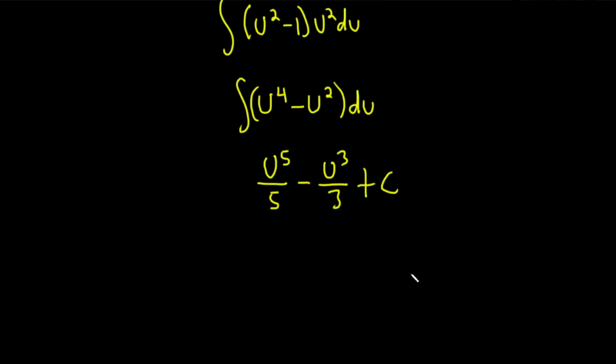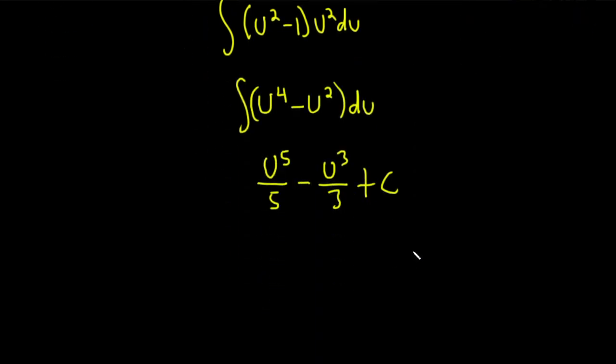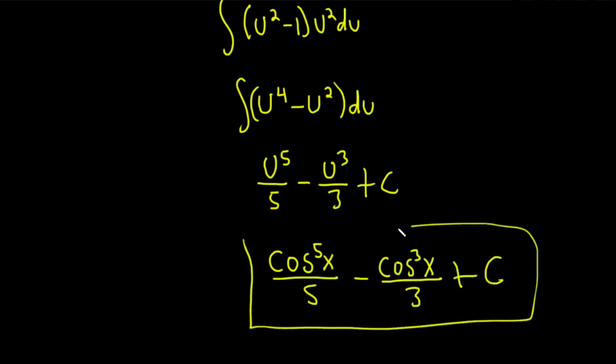And let's go back. Our u, what was our u? Our u was cosine. So now we just replace all of these with cosines. So this is equal to cosine to the 5th power of x over 5 minus cosine cubed of x over 3 plus our constant of integration capital C. That's the final answer.